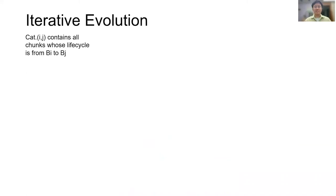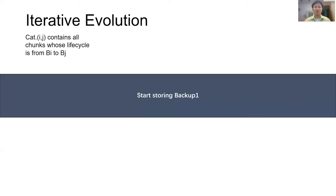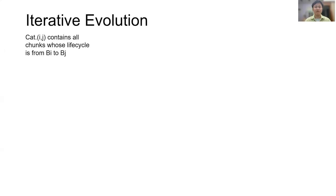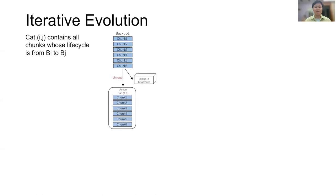Here I prepare an example to explain how iterative evolution is achieved. In this example, we name categories with coordinates. Catij contains all chunks whose life cycle is from Bi to Bj. In the beginning, the system is initialized and we start storing backup 1. In this process, we record fingerprints of all chunks in backup 1 and deduplicate internal chunks. All unique chunks compose cat 1.1, and it naturally satisfies classification-based chunk layout, and doesn't require arranging.